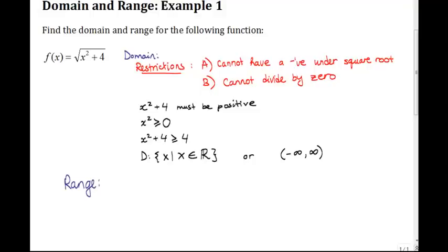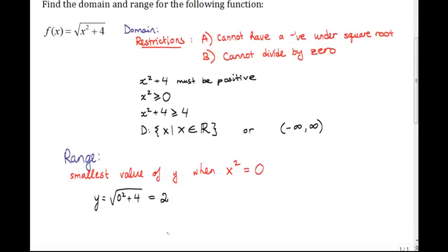And since we know that x squared must be greater than or equal to 0, it holds that y will be at a minimum when x squared equals 0. Therefore, we sub in 0 for x squared, and in this case, we find that y equals 2. So, we have our minimum value of y.